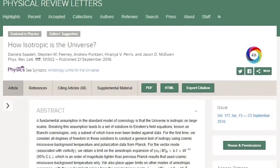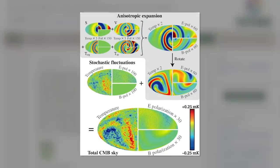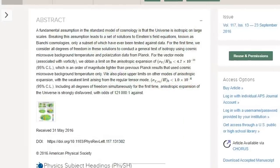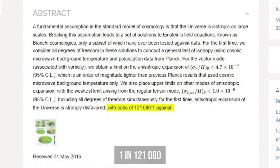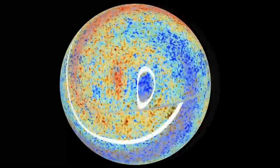According to the results, the probability that the universe isn't homogenous and the axis of evil really exists is only 1 in 121,000. But don't get upset right away.